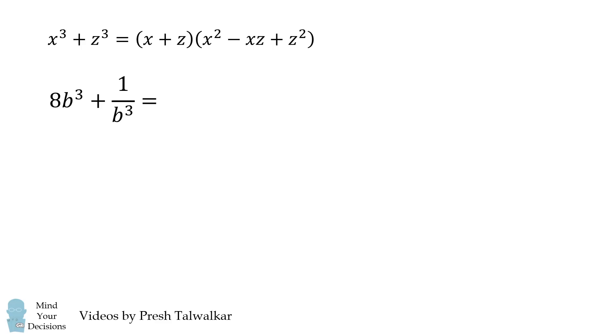Notice that 8b cubed plus 1 over b cubed is a sum of cubes. We'll let x equal 2b and z equal 1 over b. We now use our formula and we get the following product.